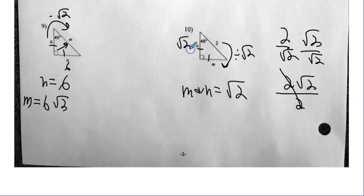And again, that makes sense — if I multiply by radical two, radical two times itself is simply two. So I can check my work.